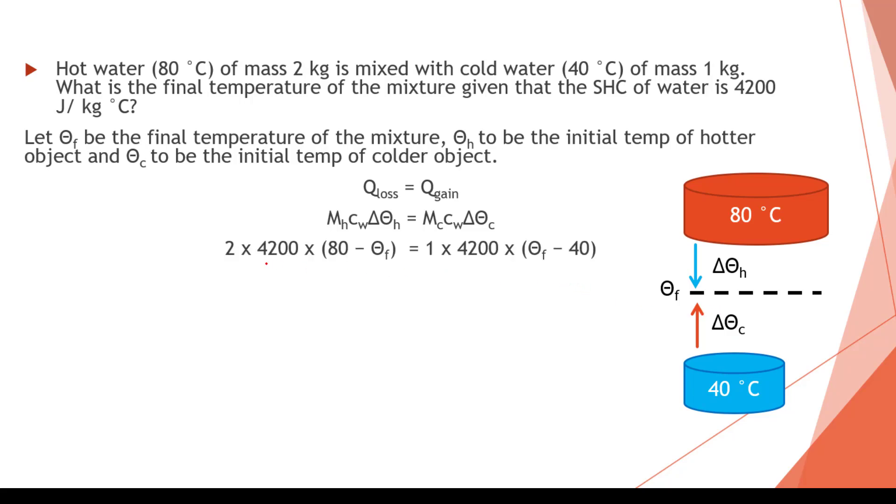By substituting the various values. So the hotter object is mass of 2, specific capacity of water. Then the temperature change is from 80 to the final temperature. Likewise for the colder object is 1, 4200. The temperature change is from final temperature to the 40 degrees Celsius.